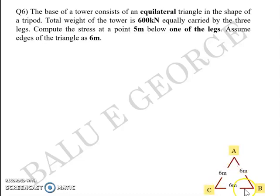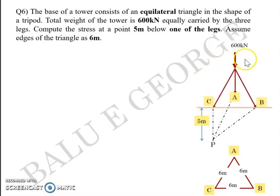In short, it's a tower supported on three legs like this with sides assumed to have an equilateral pattern with side 6 meters. The plan would look like this and the elevation would look like this. You have the total weight 600 kilonewtons distributed equally by the three legs. Let's call them C, A, and B. You're asked to find the vertical stress intensity at a point 5 meters below any of the legs, so let's take that leg to be C. So the point P, our target point, is 5 meters below that.